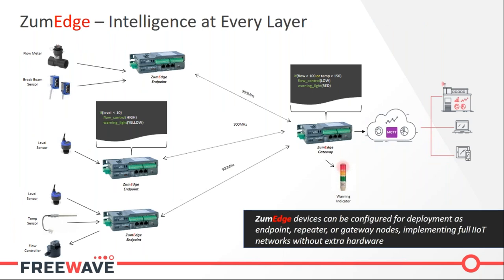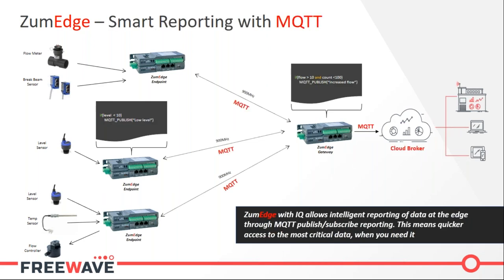ZoomEdge devices can also be used to create full networks on their own, introducing the option for not just IO connection but automation and intelligence at every node. The user can automate the network to make decisions based on sensors at the edge, gateway, or at any point, with a combination of data sources available to all the nodes. In one example, a ZoomEdge endpoint makes decisions based on its individual IO inputs, while a ZoomEdge gateway makes decisions based on all inputs and controls a warning indicator and response.